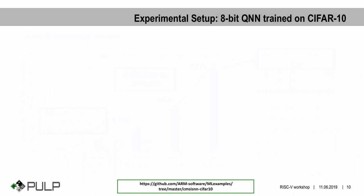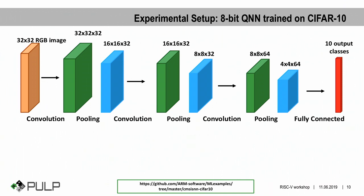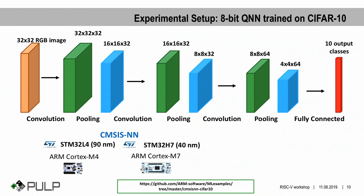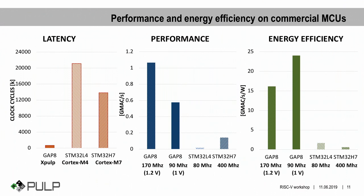As an additional test, we compared the CMSIS-CNN library with PULP-NN by inferring an entire 8-bit quantized network trained on the CIFAR-10 dataset. For comparison we used commercial microcontrollers: CMSIS-CNN was run on the STM32L4 (low-end) and the STM32H7 (high-end). PULP-NN was used to infer the network on GAP8, a commercial embodiment of PULP produced by GreenWaves Technologies in 55nm. In terms of latency, we achieve a speedup of 19.6 times with respect to the Cortex-M7 based microcontroller.